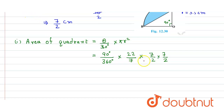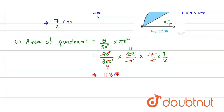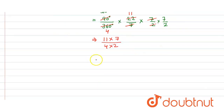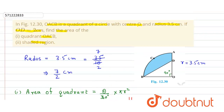Simplifying: the 7 cancels, 90 cancels with 360 giving 4, then 2 cancels with 22 giving 11. So we get 11 times 7 in the numerator and 4 times 2 in the denominator, which equals 77 divided by 8. Dividing further gives 9.625 centimeters squared.